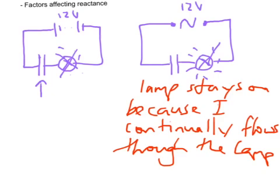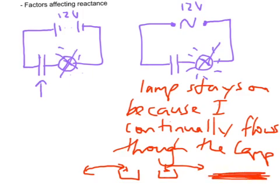So the capacitor is like a bucket of positive and a bucket of negative. And as the current flows, it's continually filling up and unfilling each of those buckets. So that allows a continual current going back and forth through the lamp to light it up.